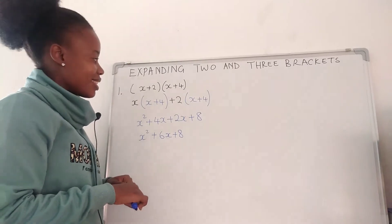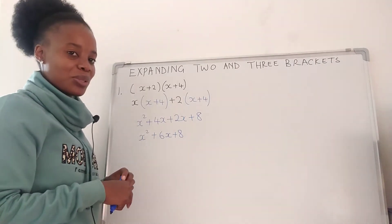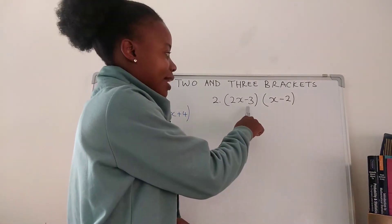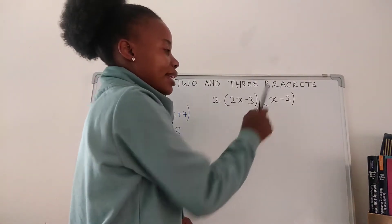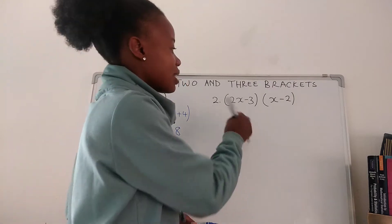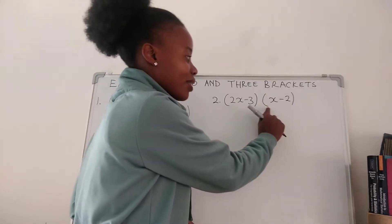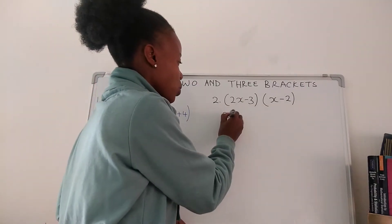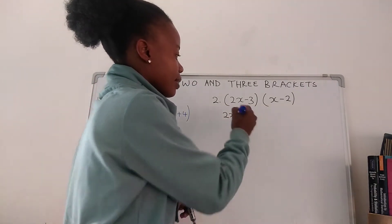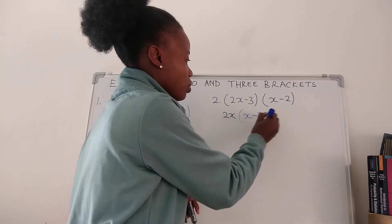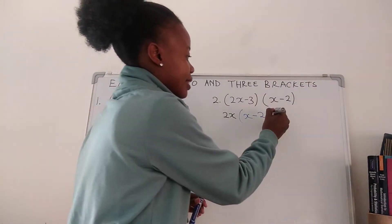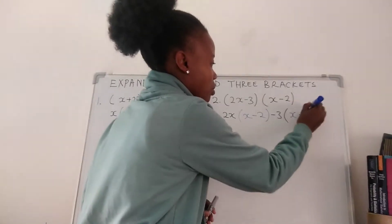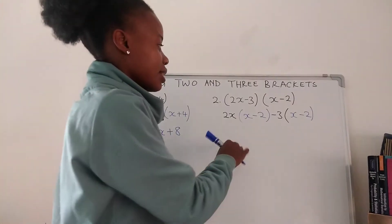Let's get to number two. Number two: we have (2x − 3) times (x − 2). We're going to multiply this term with everything on this side, and this term with everything on this side. So we're going to have 2x(x − 2) and negative 3(x − 2).